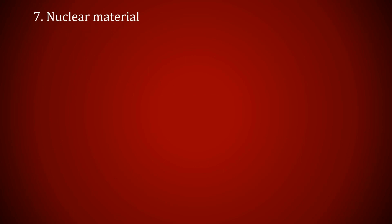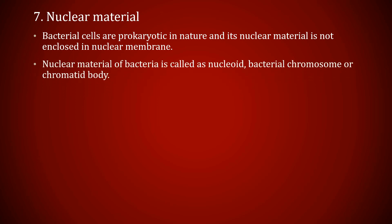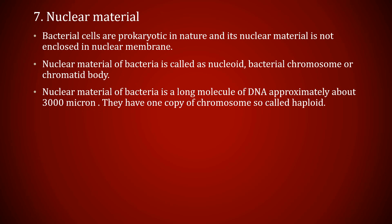The next is nuclear material. Bacterial cells are prokaryotic in nature and the nuclear material is not enclosed in a nuclear membrane — it is dispersed in the cytoplasm. The nuclear material of a bacteria is called the nucleoid, bacterial chromosome, or chromatin body. It is a long molecule of DNA approximately 3000 microns, which is 1000 times the length of the bacteria. Bacteria have one copy of the chromosome and are therefore called haploid.